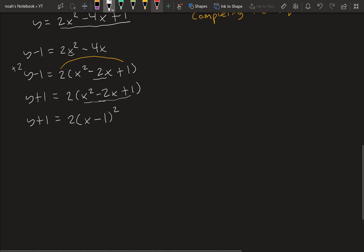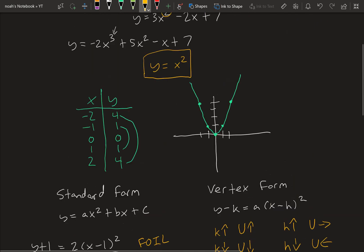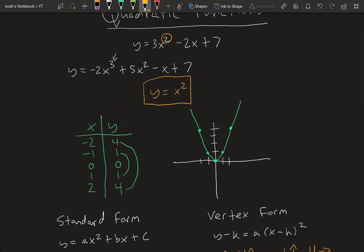We can start with the domain. And this is which x values is the function allowed to be, basically. So it can be any real number. This is because if we look at this graph up here, it can be any x value infinitely to the left and infinitely to the right.